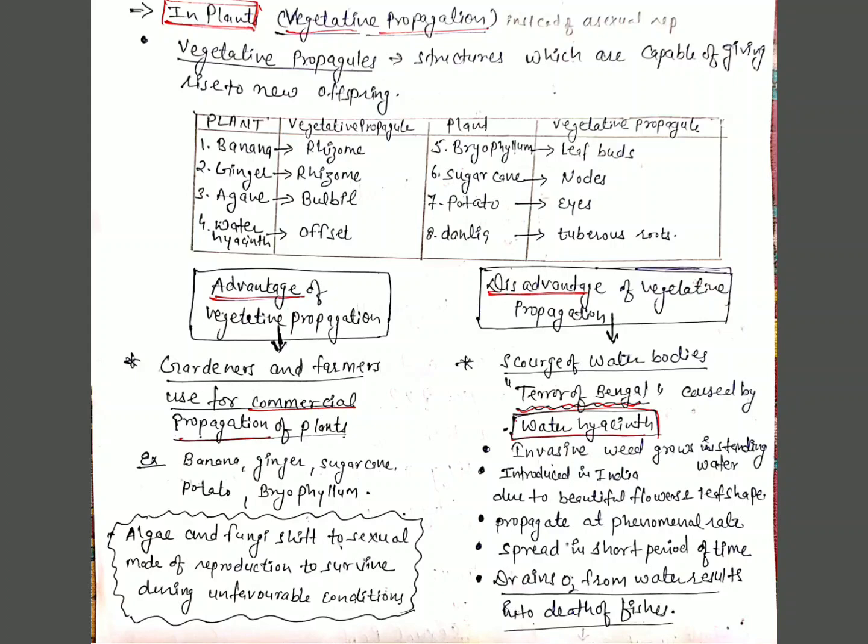Vegetative propagation can be used by gardeners and farmers for commercial propagation of plants like banana, ginger, sugarcane, potato, and Bryophyllum leaf. Water hyacinth is an invasive weed that grows in standing water; it was introduced in India due to its beautiful flowers and leaf shape. It propagates at a phenomenal rate, spreads in a short period of time, drains oxygen from the water leading to the death of fish, and is very difficult to get rid of.